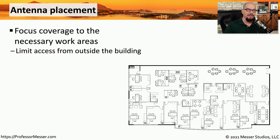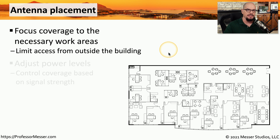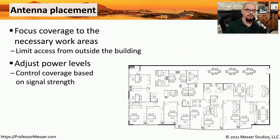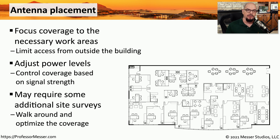One way to limit people connecting to your wireless network is to limit where the signal happens to go, so we need to be very careful about where we place antennas on our wireless access points. Normally, we would configure the power levels on these access points to only allow connections from inside of the building — we don't want someone in the parking lot able to communicate to our internal networks. This might require you to walk around the building to determine where the strongest signals are and adjust the antennas accordingly.